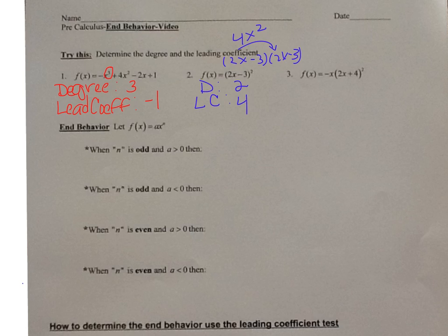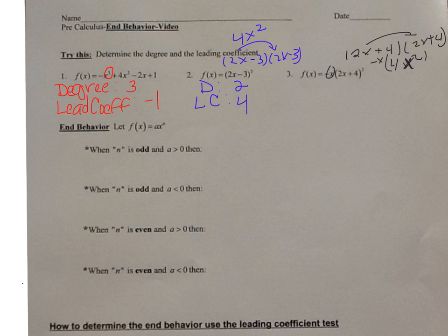For number 3, f(x) = -(2x + 4)². So (2x + 4)² = (2x + 4)(2x + 4). When I multiply 2x times 2x, I get 4x². Then I multiply by negative x, which gives me negative 4x³. So my degree is 3 and my leading coefficient is negative 4.